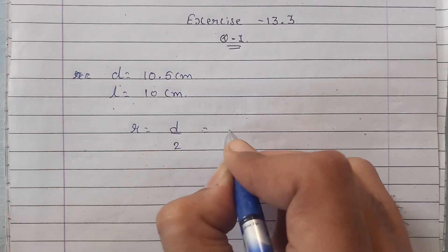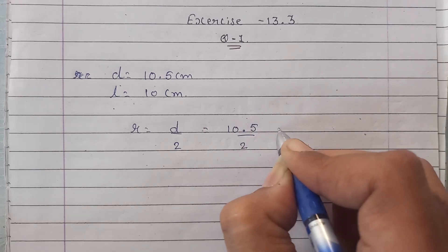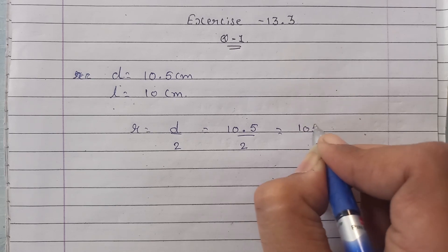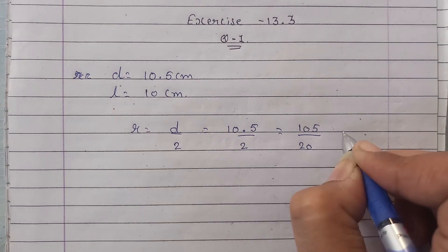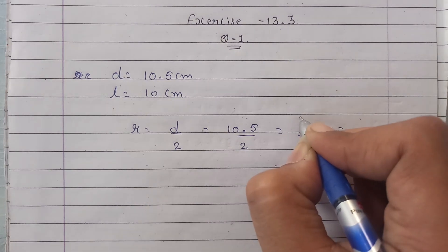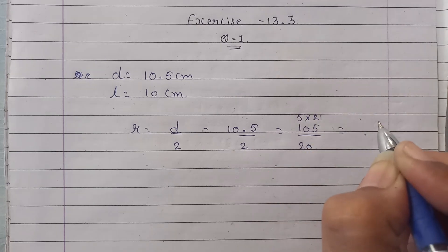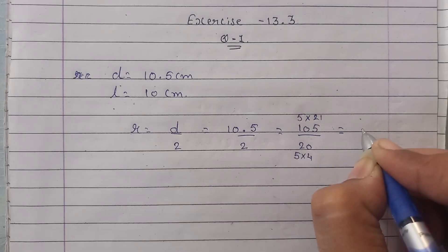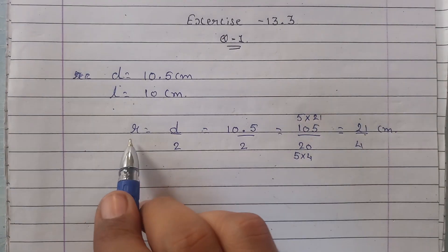So let's find out the radius. Radius will be half of diameter, so that is 10.5 upon 2. Isse hum fraction mein convert kar dete hain, so that will be like 105 divided by 2 into 10, that is 20. Ab hum dono ko 5 se reduce kar sakte hain. This is 5 into 21, and this is 5 into 4. So ye ho jayega 21 upon 4 centimeters.